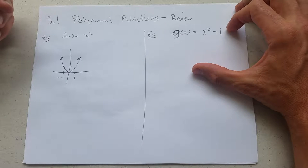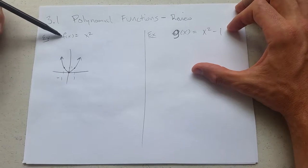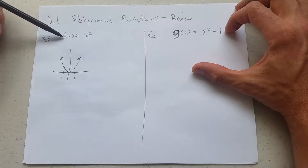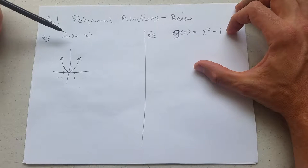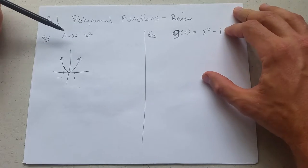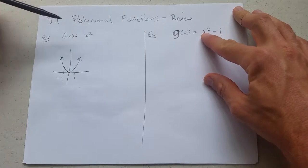This function g, it's the same function except there's a minus 1. What is a minus 1? That is a shift down. How do I know it's not a horizontal shift? If it was horizontal, it would appear next to the x.